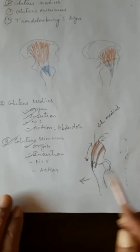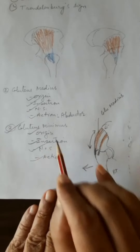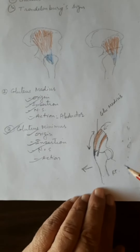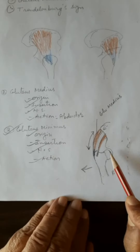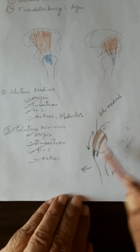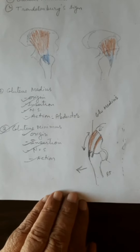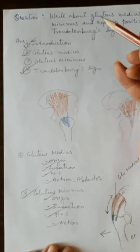The action of gluteus minimus is the same as gluteus medius — it is an abductor of the thigh at the hip joint. Its nerve supply is also the same: the superior gluteal nerve. In the similar way, it can tilt the pelvis toward the side of contraction. So both muscles are very strong abductors of the thigh at the hip joint. Having understood gluteus medius and minimus, we are now ready to understand the Trendelenburg sign.